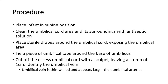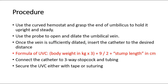We also have to identify the umbilical vein. The umbilical vein is thin-walled and appears larger than the umbilical arteries. Use the curved hemostat and grasp the end of the umbilicus to hold it upright and steady. Use the probe to open and dilate the umbilical vein. Once the vein is sufficiently dilated, insert the catheter to the desired distance. The formula for umbilical vein catheter length is: body weight in kilograms times 3, plus 9, divided by 2, plus stump length in cm.